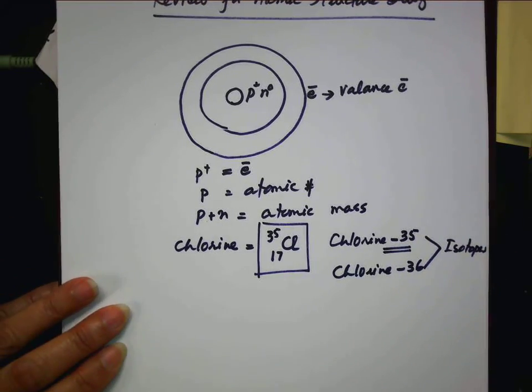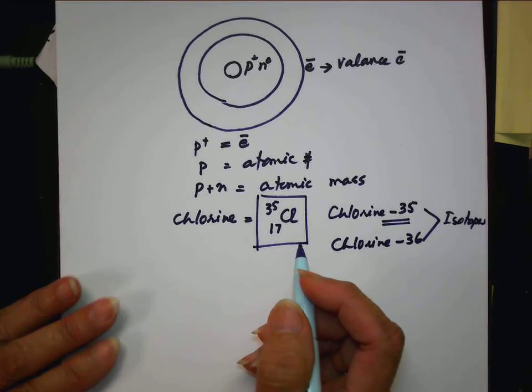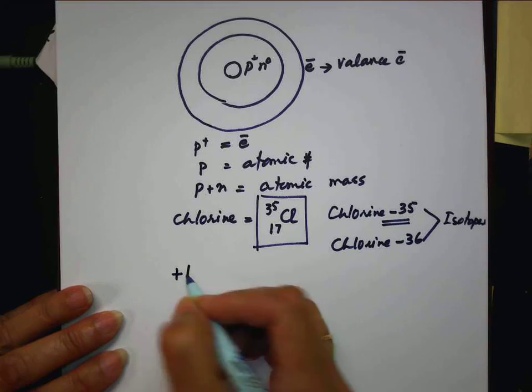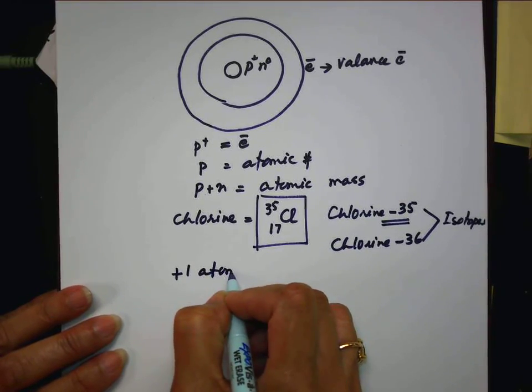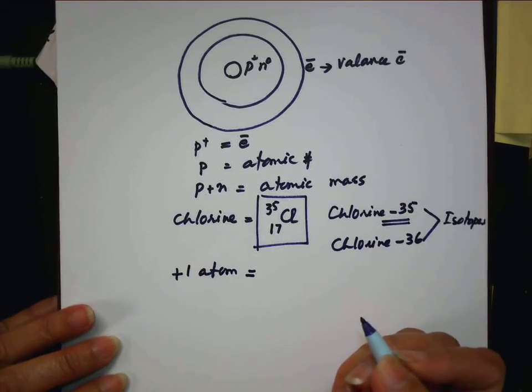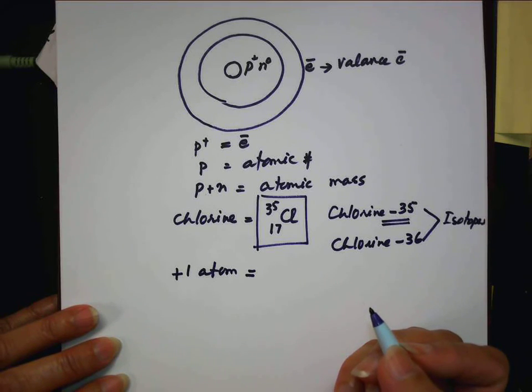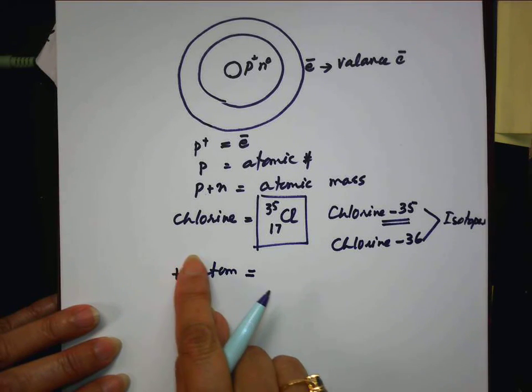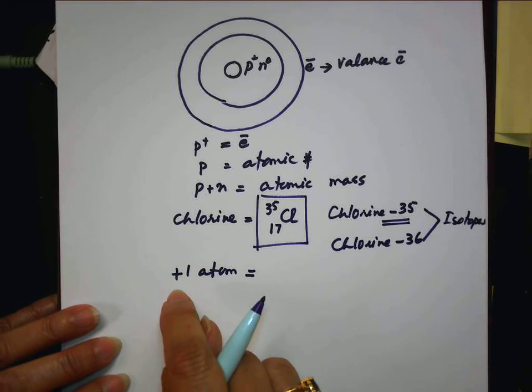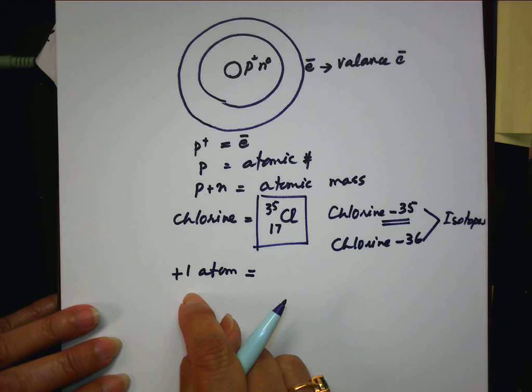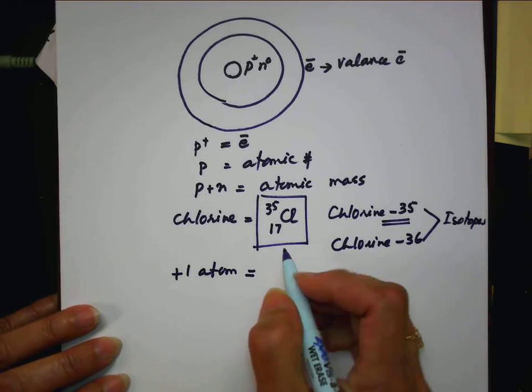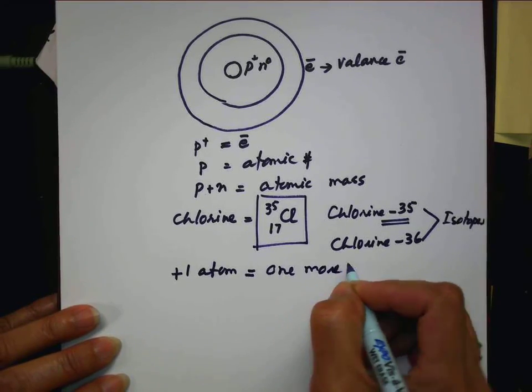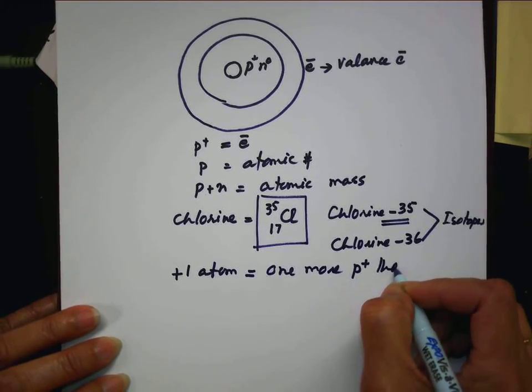So let's look at a positive ion. What do you know if it is a positive one atom? Any atom. If they have a positive one. What does positive one mean? One more proton, then electron. Correct. So write it down. One more proton, then electron.